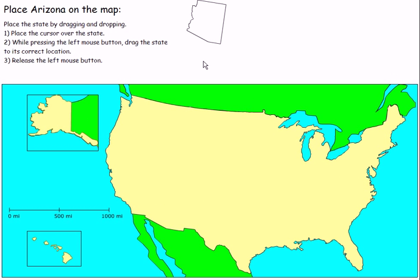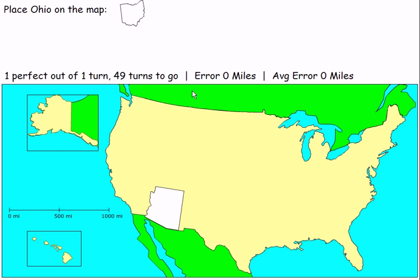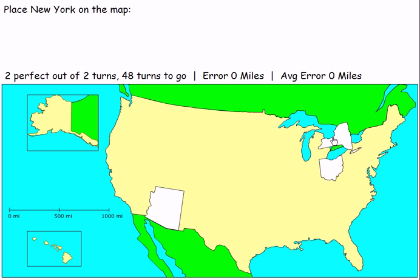Okay, we're going to do this one for real. Place Arizona on the map — well, how fortuitous. Arizona goes right here, and I get one perfect out of one, 49 turns to go. Now I have Ohio, and Ohio goes right there. New York goes right there. Good. I have played this game before — I played it a long time ago. It's not like I played it immediately before recording this, just in case anybody's wondering.